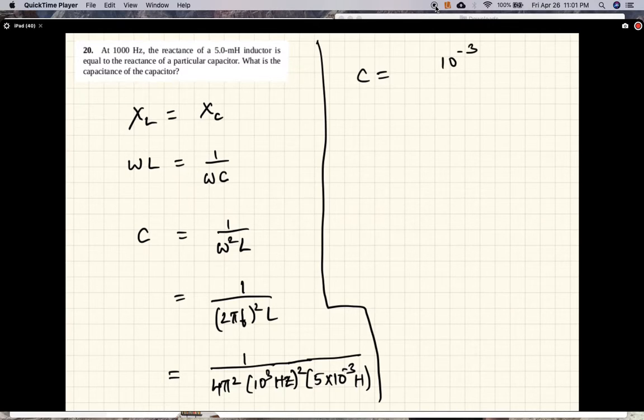The units would be, well, we are all in SI units, so capacitors are in farads. This is 1 over seconds squared, that means seconds squared at the top. Seconds squared over henrys is farads.